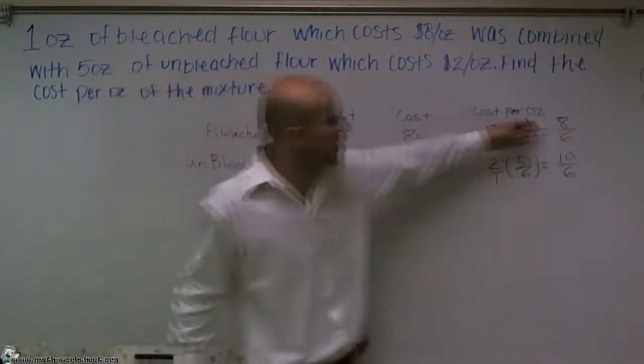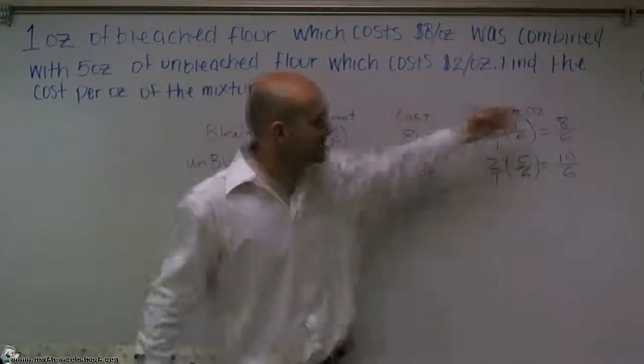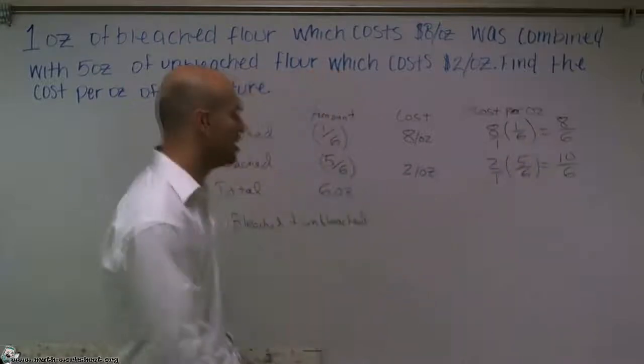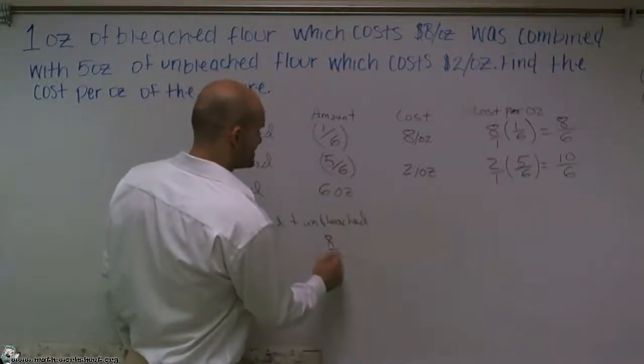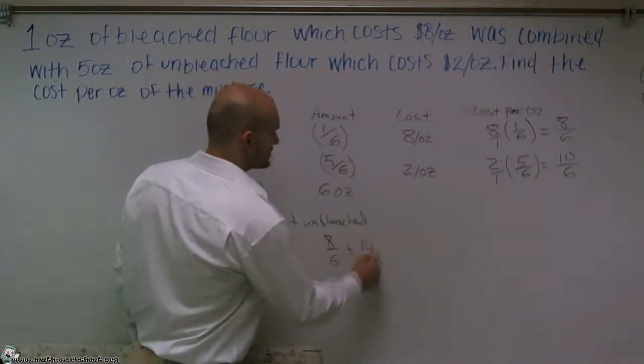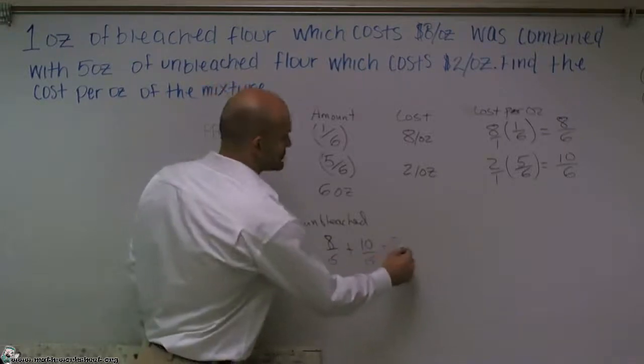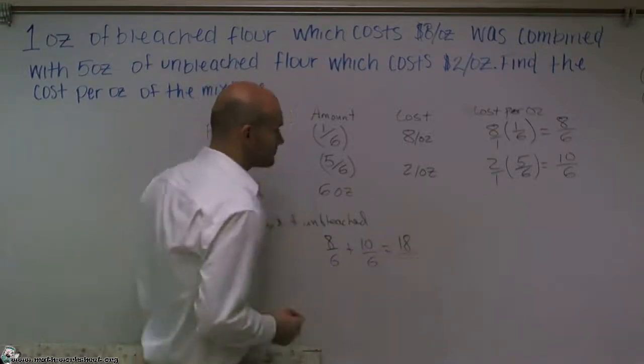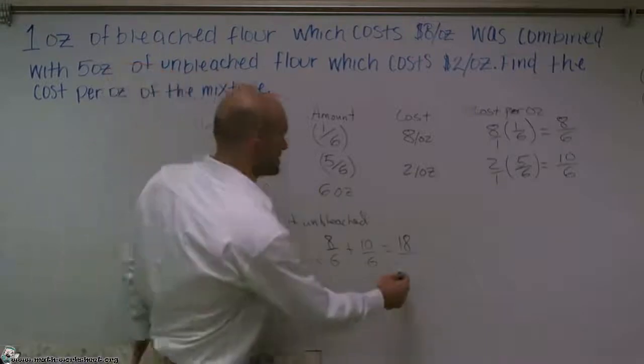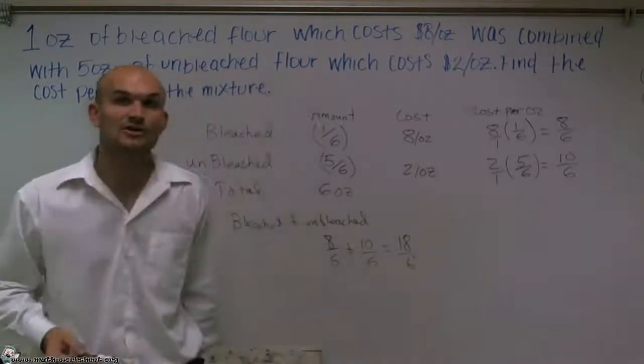So what I'm going to do is I'm going to take the cost per ounce of the bleach and add it to the cost per ounce of the unbleached. So I'm going to have eight-sixths plus ten-sixths, which is going to give me 18-sixths, meaning it's going to cost us $18 per six ounces.